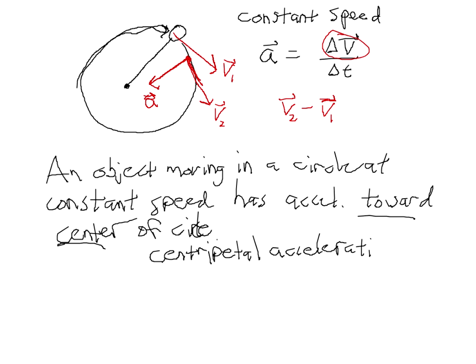Centripetal means towards the center — literally it means center-seeking, but more loosely translated it means toward the center. That is true of any object moving in a circle at constant speed. Now, force is equal to mass times acceleration. So if there's an acceleration of an object toward the center of the circle, there must also be a force toward the center of the circle.